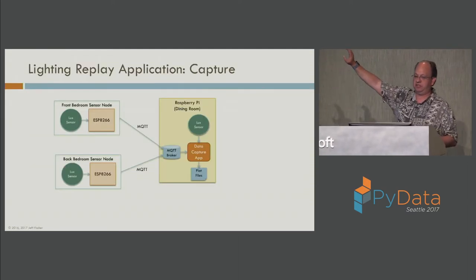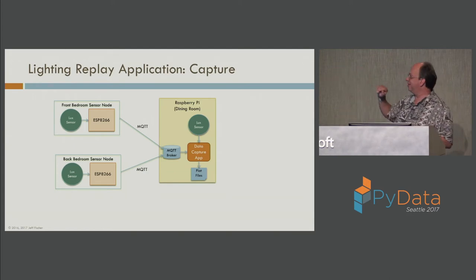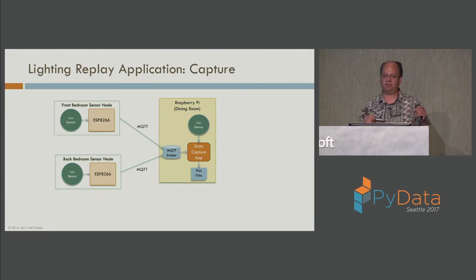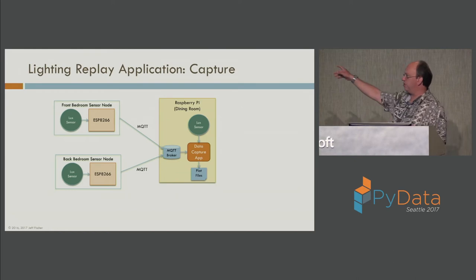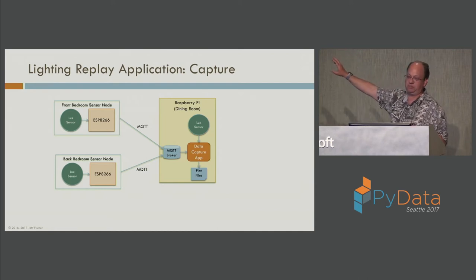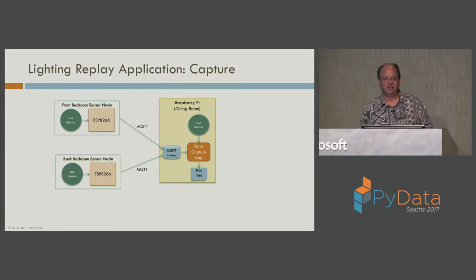For data capture, I had ESP8266 boards in my front bedroom and back bedroom, and the Raspberry Pi as server in the dining room. I'm running a protocol called MQTT — Message Queue Telemetry Transport — which is a publish-subscribe protocol on top of TCP/IP, very lightweight. MicroPython has a client library for it, and there's a broker called Mosquitto you can apt-get install on Raspberry Pi or any Linux system. On the Raspberry Pi, I have a data capture app that receives from the light sensors and writes flat files.